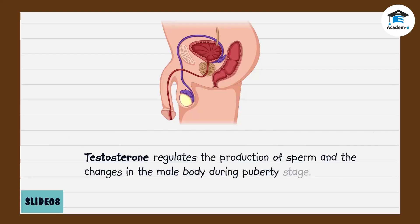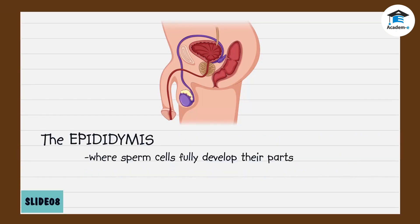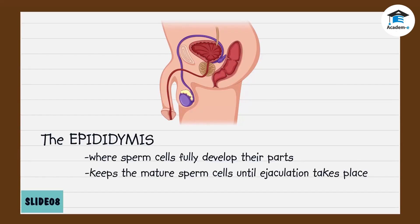Testosterone regulates the production of sperm and the changes in the male body during puberty. When the sperm cells are produced, they move to the epididymis to fully develop their parts. This part keeps the mature sperm cells until ejaculation takes place.